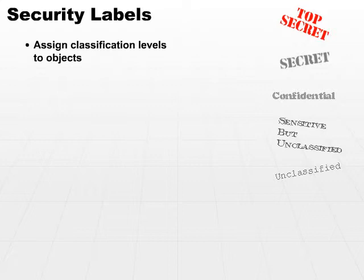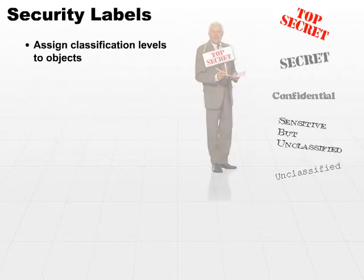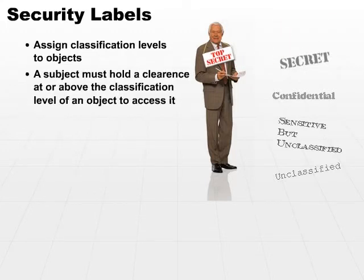A subject may have a security clearance of secret or top secret, whereas the specific security label would apply to the object. So if you have a security clearance of top secret and you are attempting to access — you being the subject — an object that has a security label of top secret, that access would be successful. A subject must be labeled at or above the classification level of an object in order to access that particular object.